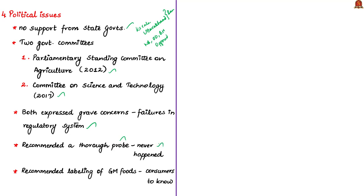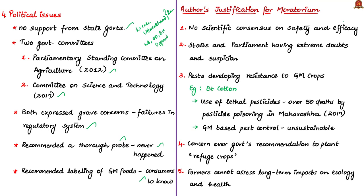Additionally, both committees recommended the labelling of genetically modified foods to protect the consumer's right to know whether the food they are consuming is genetically modified. The author justifies the moratorium on BT Brinjal, stating: there is no scientific consensus on the safety and efficacy of BT Brinjal; the states and Parliament have extreme doubt about the regulatory system; and in recent years, pests have developed resistance to BT cotton, forcing farmers to spray lethal pesticides, which led to over 50 deaths by pesticide poisoning in Vidarbha region of Maharashtra in 2017.